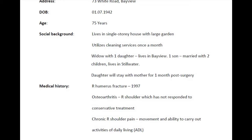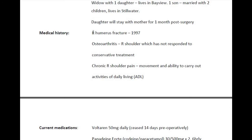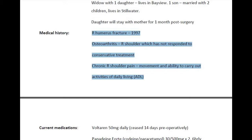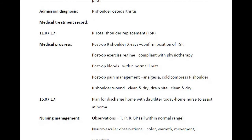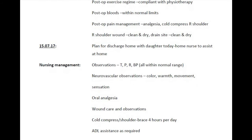The medical history part is irrelevant and can be omitted because the home nurse doesn't need to know the medical history of the patient, but needs to know the treatment received during the hospital stay and the progress she made during the time period. The information given in the current medications, admission diagnosis, medical treatment, and progress are very important and should be mentioned in the letter in an organized manner. Not a single piece of information can be omitted from these parts, as doing so may result in a lower score in OET writing.